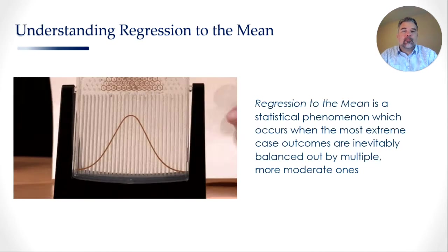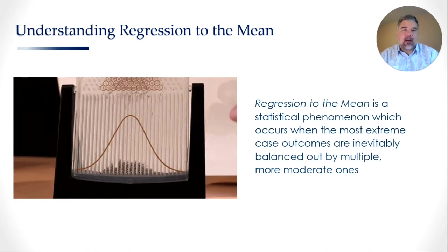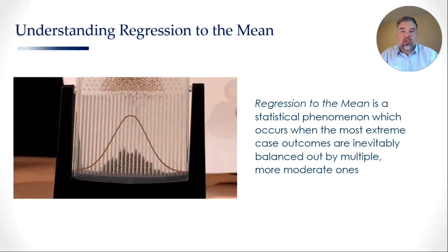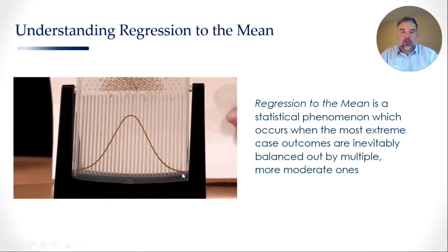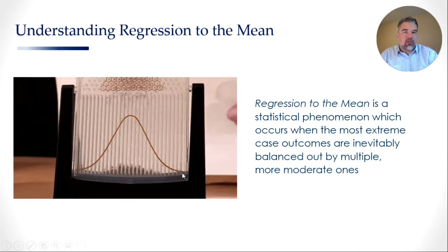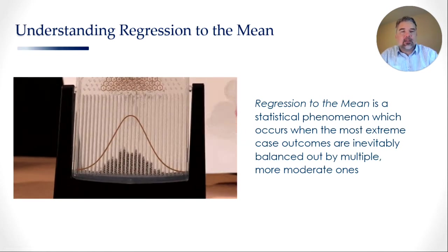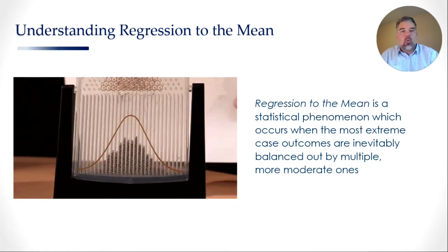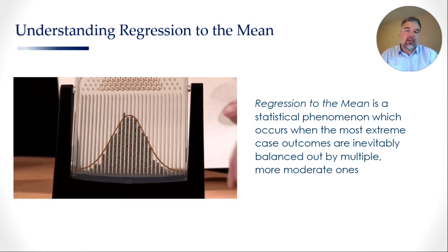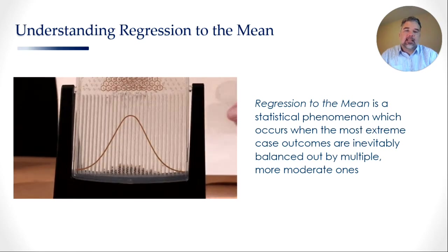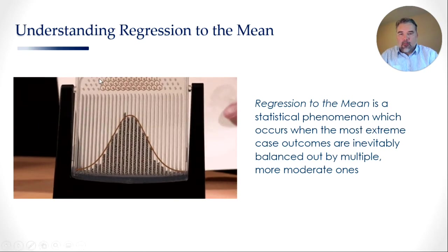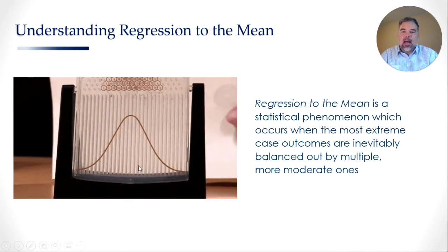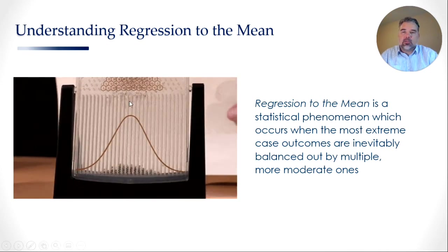The really cool thing about this experiment is that it doesn't matter how many times you do it or how many balls you use — they will always form this typical bell curve shape. That is what regression to the mean is: a statistical phenomenon which occurs when the most extreme case outcomes are inevitably balanced out by multiple more moderate ones. In simple terms, for every one pellet that ends up at the extreme, hundreds, possibly thousands of pellets will gravitate towards the middle.